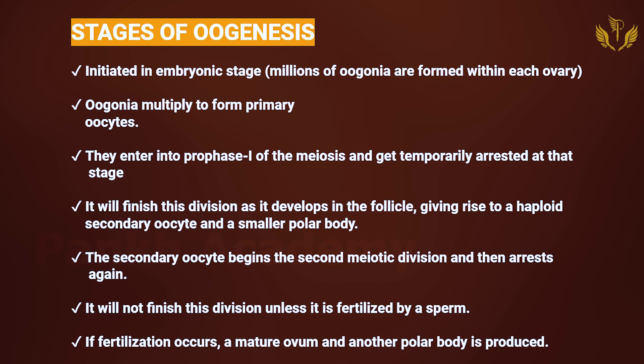When the division is completed, a haploid secondary oocyte and a smaller polar body are formed. This secondary oocyte begins the second meiotic division but is arrested again and will not finish this division unless it is fertilized by sperm. If fertilization occurs, a mature ovum and another polar body are produced.